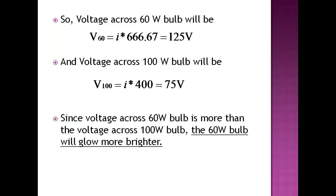As seen here, the voltage across 60 watt bulb is more than the voltage across 100 watt bulb. So the 60 watt bulb will glow more brighter than the 100 watt bulb. This happens only if the two bulbs are connected in series.